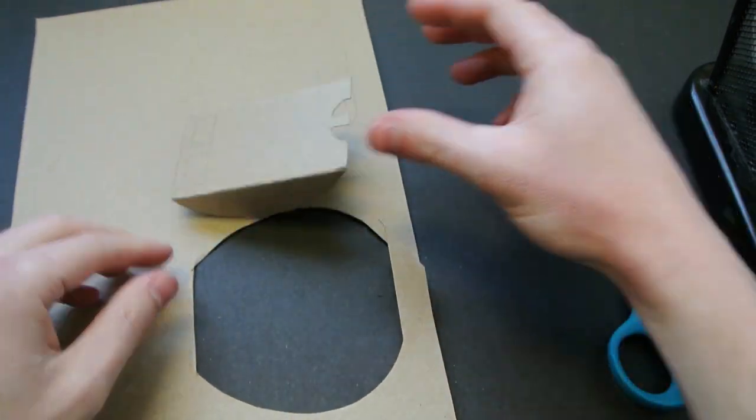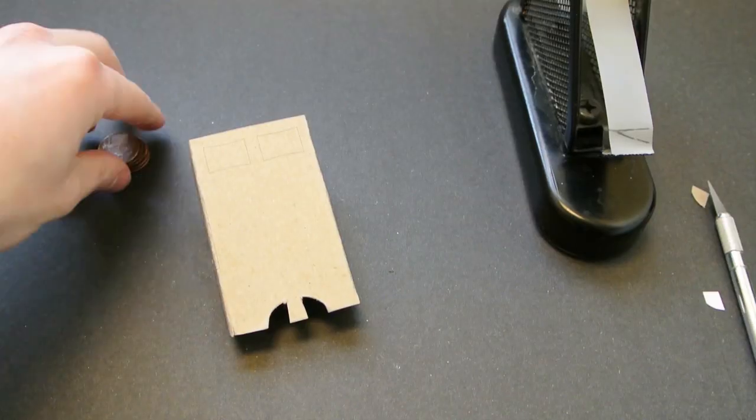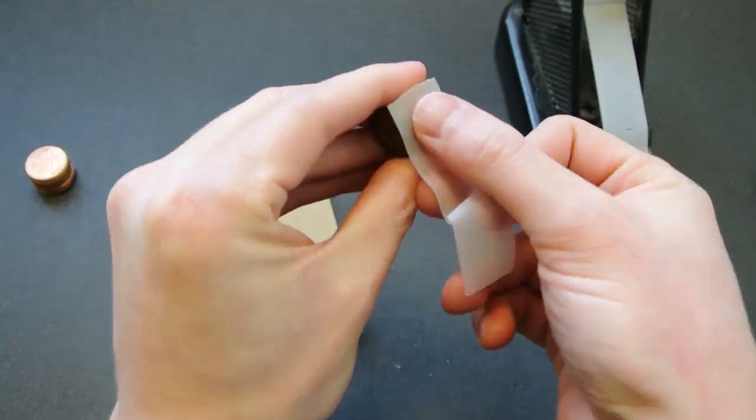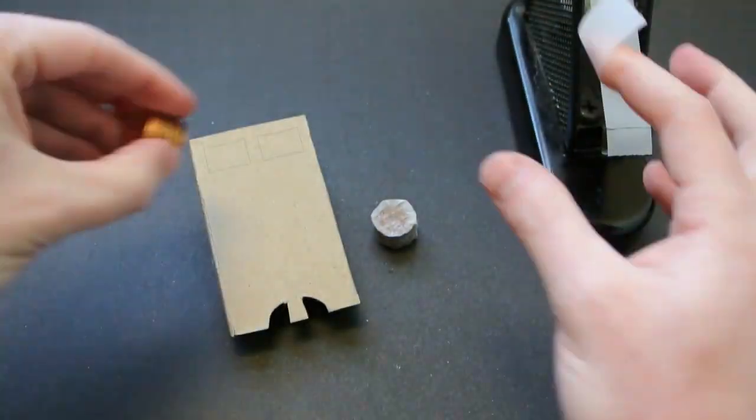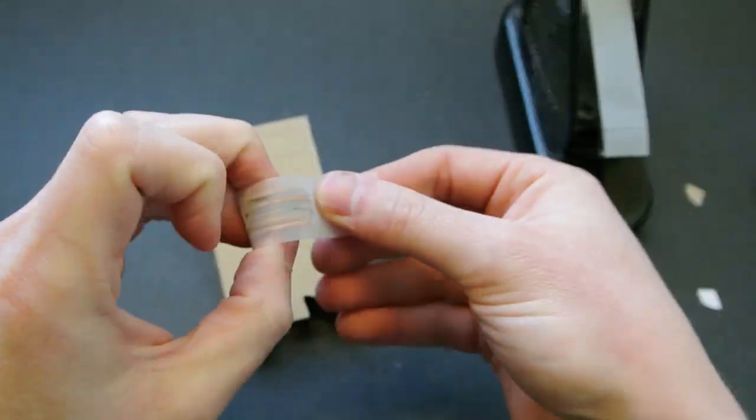To make the counterweights, we simply wrap two stacks of eight pennies with tape. It doesn't have to be extremely neat, just enough to hold them together.